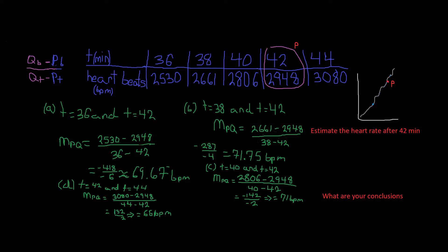So let's say we're around t equals 40, which puts our secant line really, really close to P. And what happens is, when our secant line gets super close to P — say t equals 41.99999 — it's going to be right on top of P.